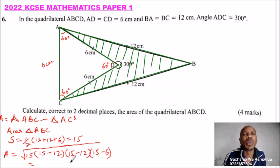When you compute using your calculator, this will be 15 multiplied by 3, multiplied by 3, that is 15 multiplied by 9, multiplied by 9.